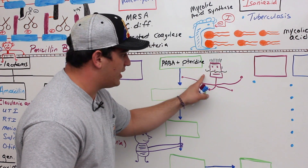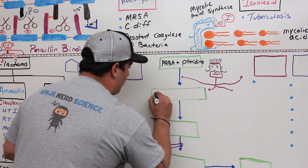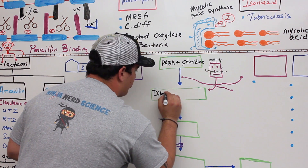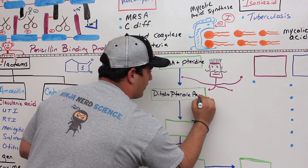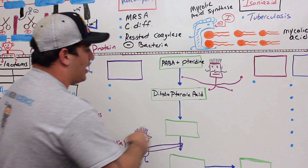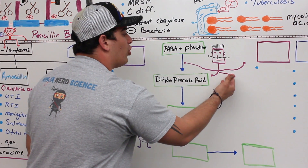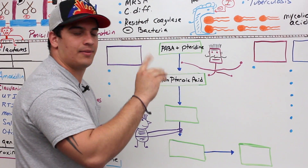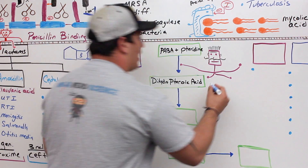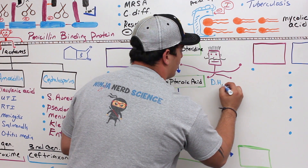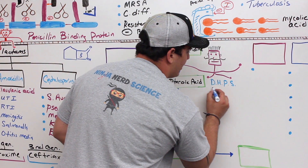Para-aminobenzoic acid and pteridine are going to be catalyzed by an enzyme. What do they produce by this reaction? The end of the reaction will produce what's called dihydropteroic acid. So what is this enzyme? It's called dihydropteroate synthetase.